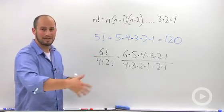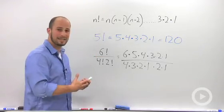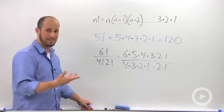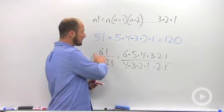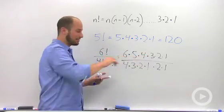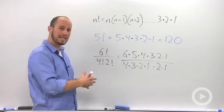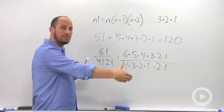Now we could multiply this all out, but if we look a little bit closer, we can actually cancel a lot of things. Six factorial is six and down, and four factorial is four and down. So those actually share four, three, two, and one.